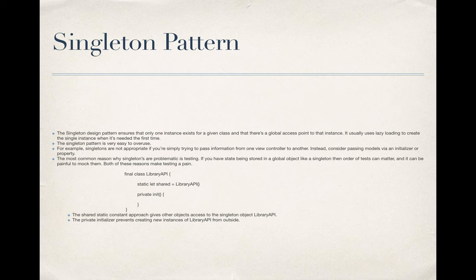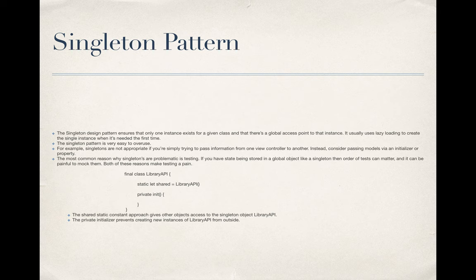Here is a small example of a singleton. You write the keyword final in front of the class, then create a static shared variable inside it, and then create a private init function. The shared static constant gives other objects access to the singleton object. The private initializer prevents creating new instances — if you do not have a private init in your singleton class, then it is not truly a singleton because other classes can create new instances of your class.